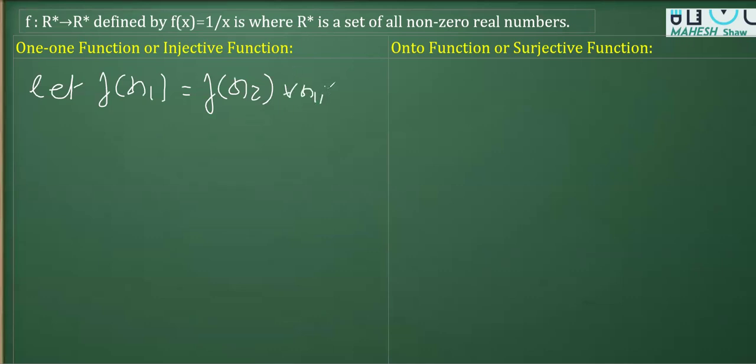If I replace x1 in this function, f(x1) will become one over x1 and f(x2) will become one over x2, where x1 and x2 are not equal to zero, as already mentioned in the question.